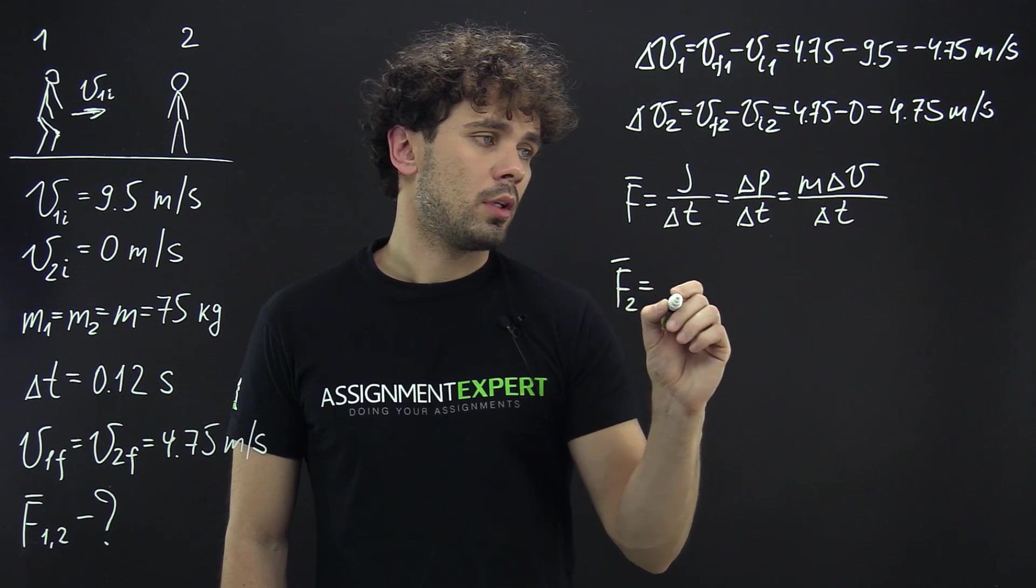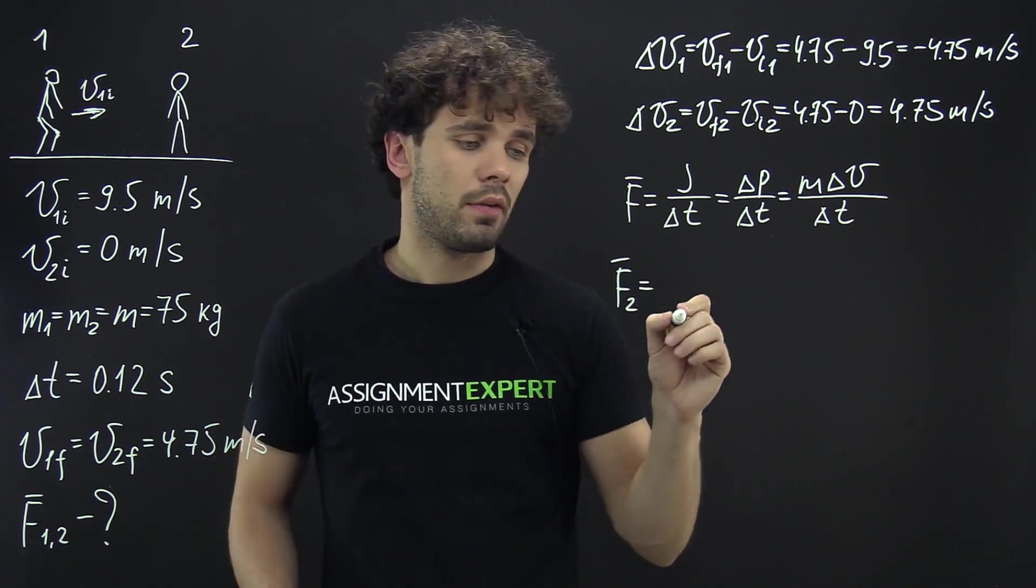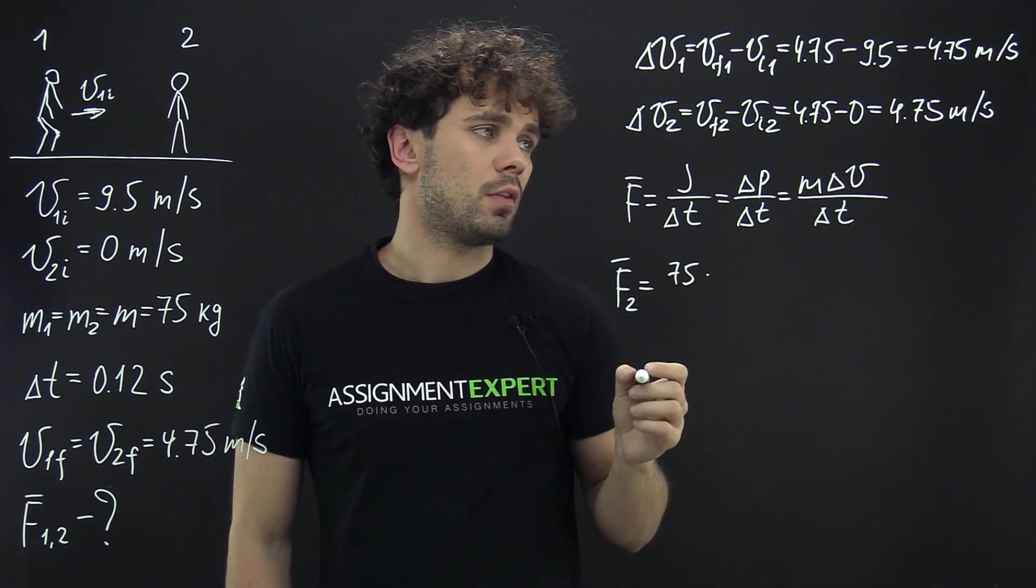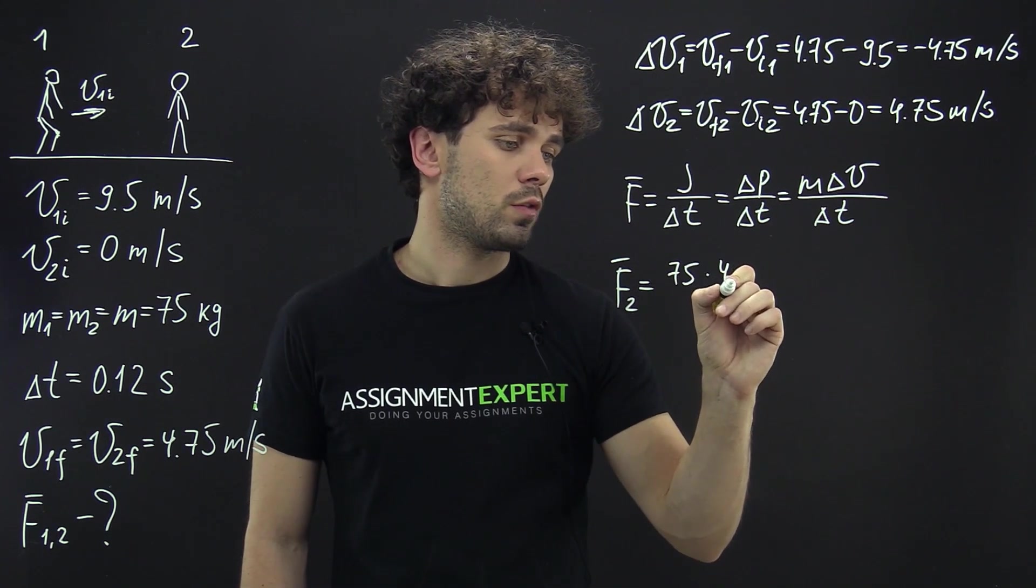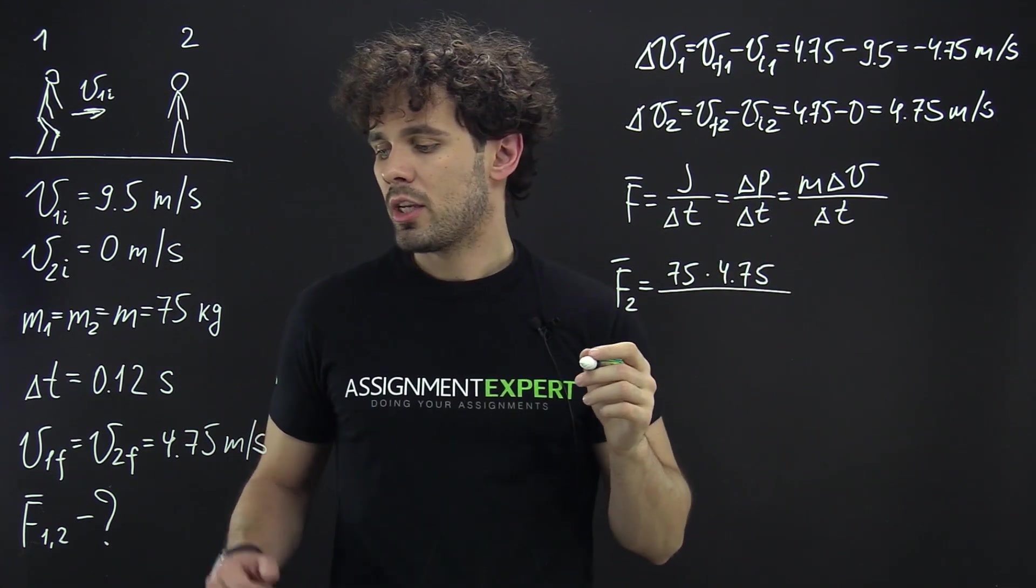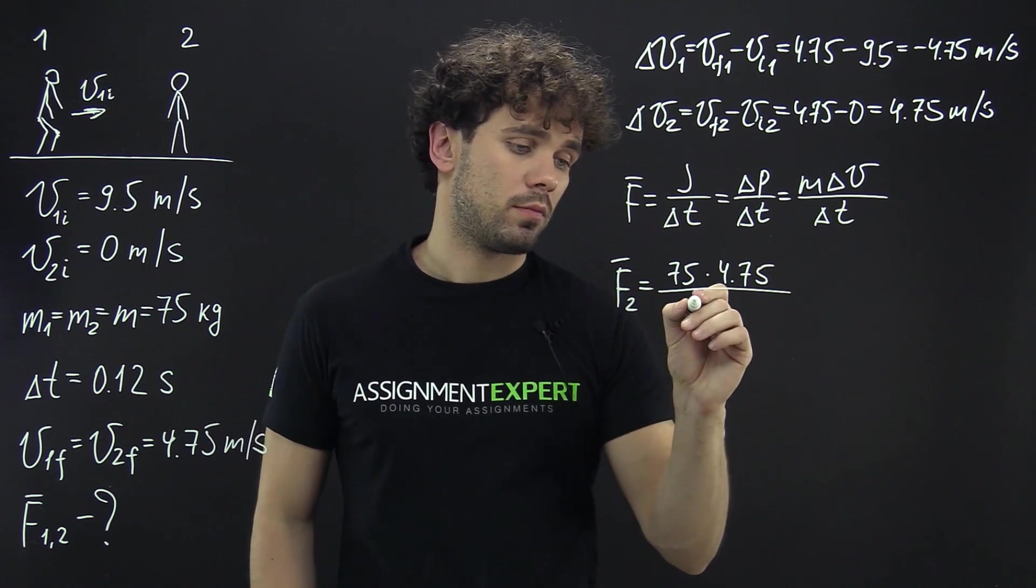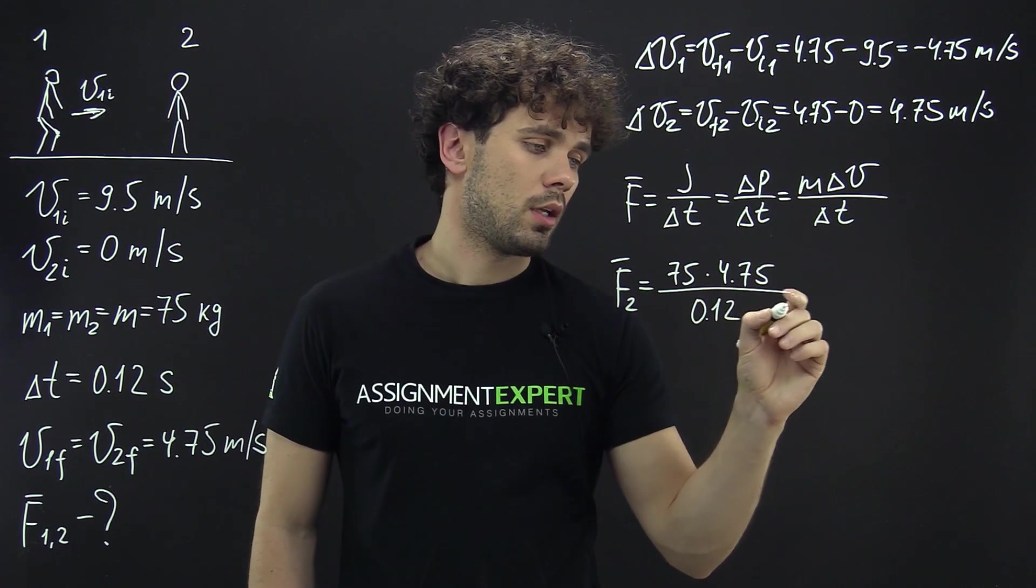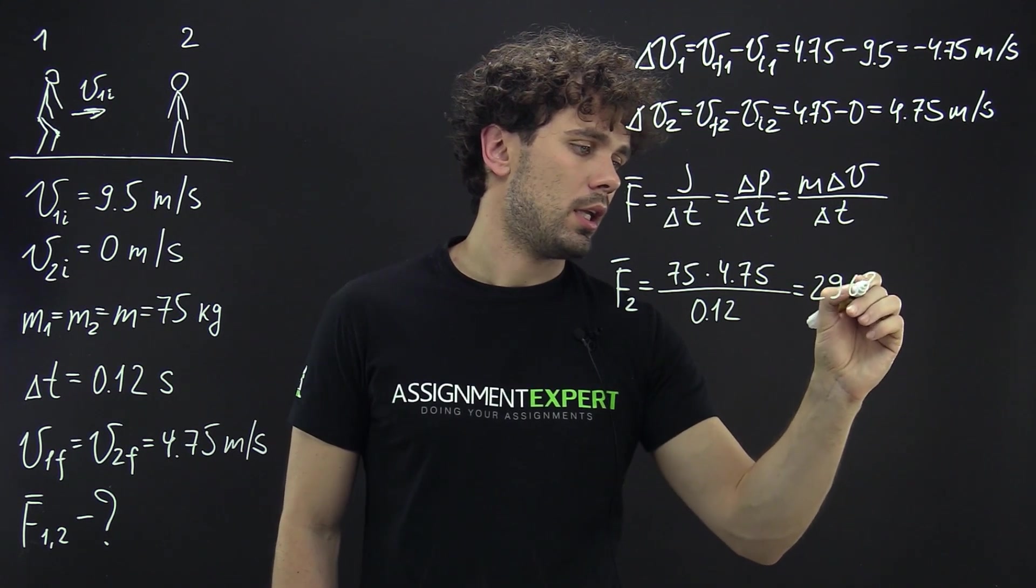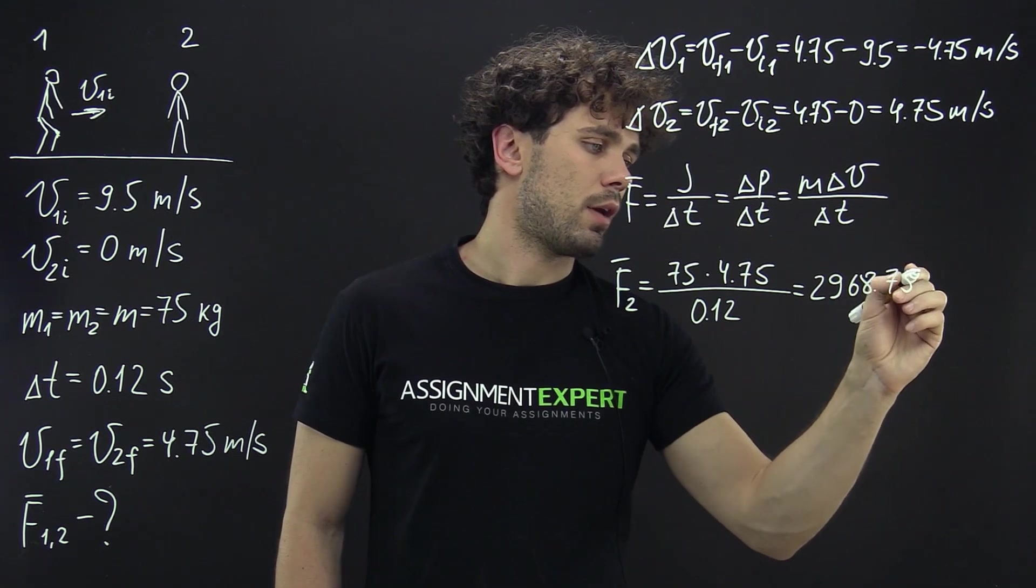F2 equals mass which is 75 times the change of the speed for the second skater which is 4.75 and in the denominator we have 0.12 and this gives us 2,968.75 newtons.